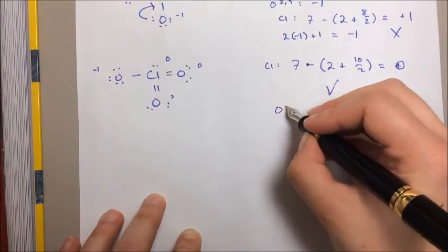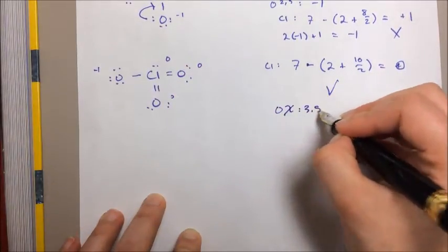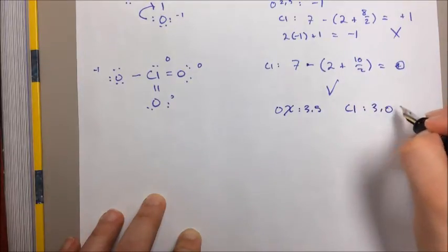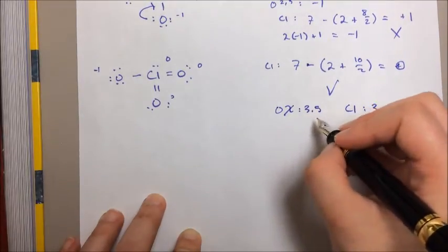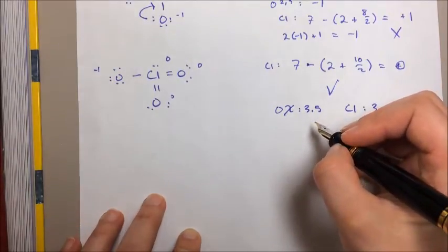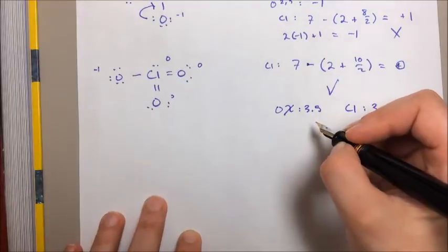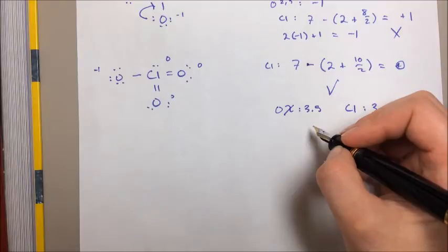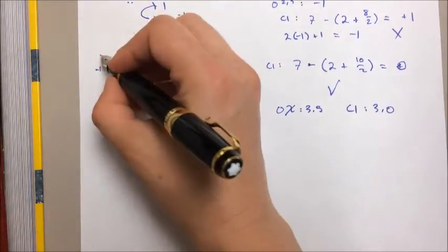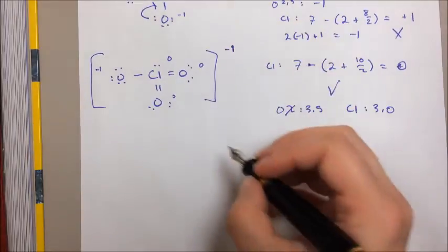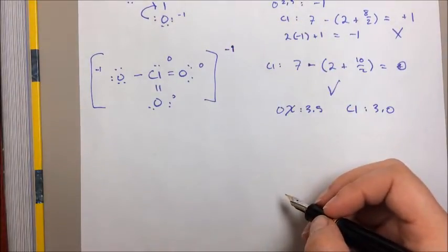Oxygen's electronegativity is 3.5. Chlorine's is 3.0. You want the negative formal charge to sit on the more electronegative atom because it's kind of greedy for electrons anyway, so it doesn't mind having a little more electron density than it would normally have. So this here, this is our resonance structure. And we've got the minus one in the brackets because it's an ionic species.